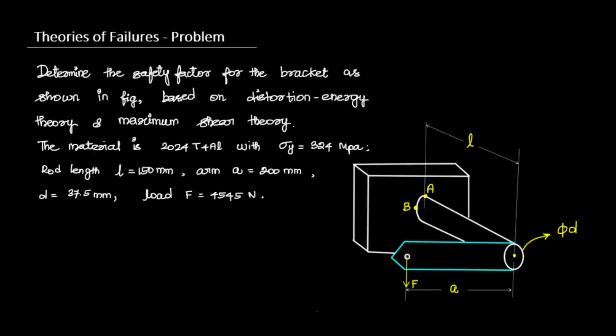In this problem, we are going to see how to solve a problem and determine the safety factor or unknown dimension based on theories of failure. Determine the safety factor for the bracket as shown in the figure, based on the distortion energy theory and maximum shear stress theory. The material is 2024-T4 aluminium with yield strength σy = 324 MPa. The rod length L = 150 mm, arm A = 200 mm, rod diameter D = 37.5 mm, and load F = 4545 N.